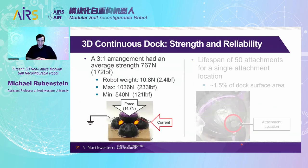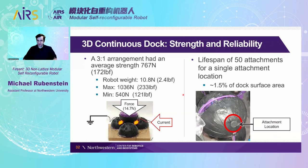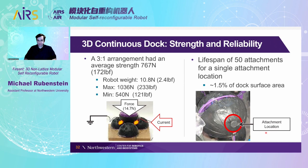We tested the strength of this new three-dimensional dock. Attaching three spheres together, it took over 750 newtons to pull them apart — quite impressive considering the robot itself only weighs about a kilogram. We also measured the lifetime of these docks: we repeatedly attached at the same point 50 times without any failure, and that point only occupies about 1.5% of the dock surface area. So if we were randomly attaching the dock, we'd have a very long lifetime of the individual docks. If they ever become too damaged, we can take a soldering iron and smooth them down again.